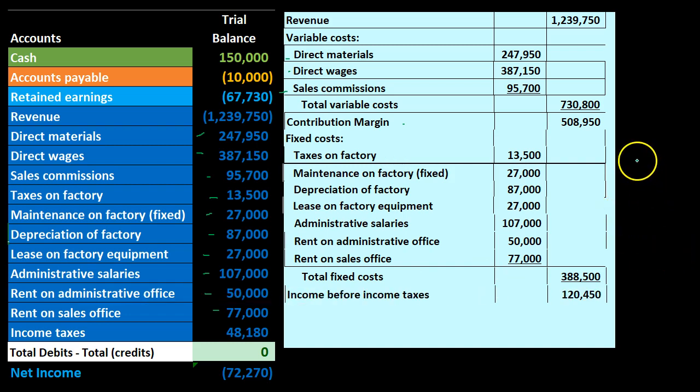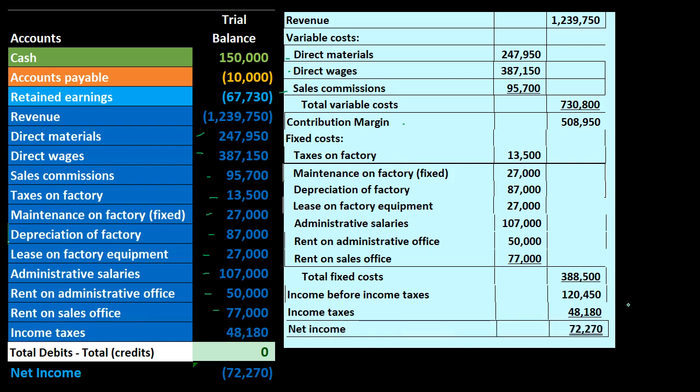The contribution margin minus the total fixed costs gives us income before income taxes, then subtracting income taxes brings us to the same bottom line net income of $72,270 — the same number we reached on the normal income statement. So why do this? Because now we can project forward: what happens if production levels change? This structure allows us to make those projections much more easily. We'll start to look at the calculations that will help us do that going forward.